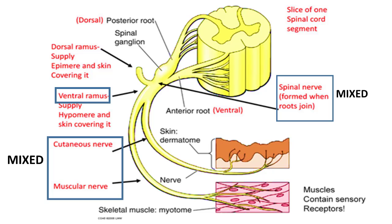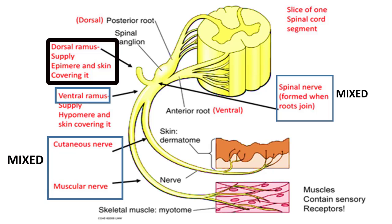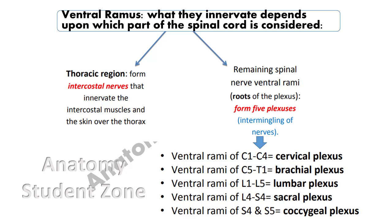The rami carry mixed fibers because they have to supply both the skin and the muscles of the body. The posterior ramus travels backward and supplies both the skin and the muscles of the back. Its sensory fibers supply the skin near the midline of the back, and its motor fibers innervate the deep muscles of the trunk, responsible for movement of the vertebral column. The anterior ramus travels forward and supplies the limbs as well as the anterior trunk. The majority of anterior rami combine to form nerve plexuses, from which major peripheral nerves arise.